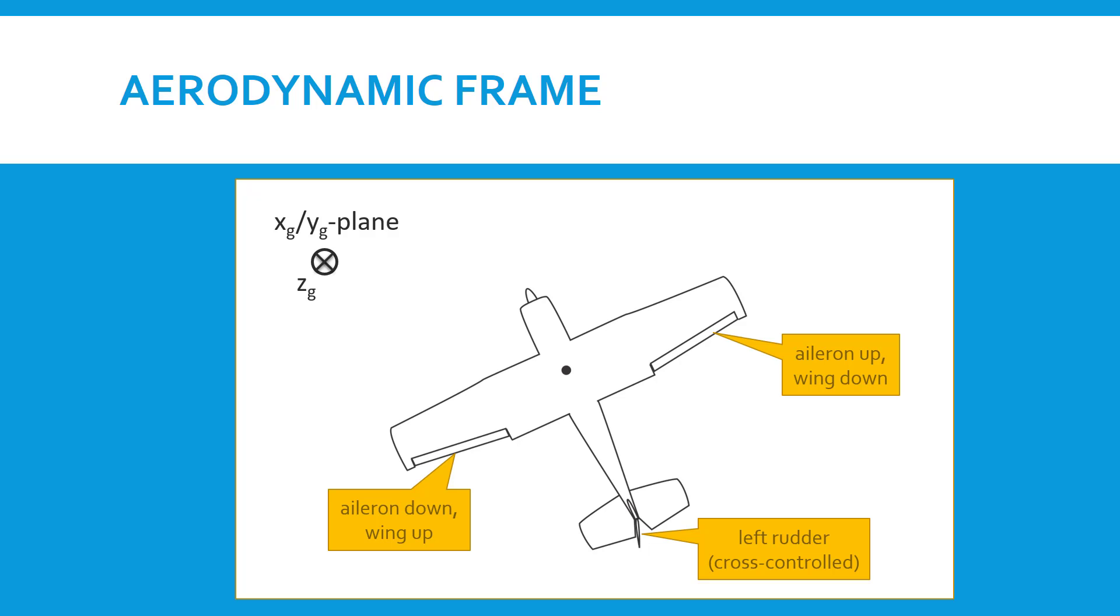The body-fixed frame defines the XB direction, which is just the longitudinal axis of the airplane. But with it cross-controlled like this, we will actually slip to the right, as we say, so we're moving not along the longitudinal axis of the airplane—we're moving to the right. The airplane is sort of flying sideways.